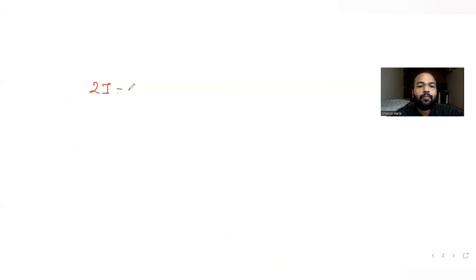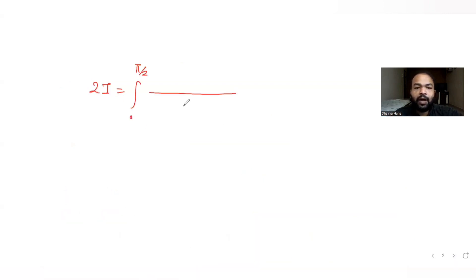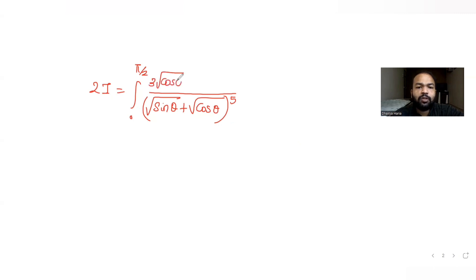I + I makes 2I. The integral is from zero to π/2. The power in the denominator was actually raised to five. When you have the same denominator — that is (√sinθ + √cosθ)^5 — you can add the numerators: cube root of cosθ plus cube root of sinθ.